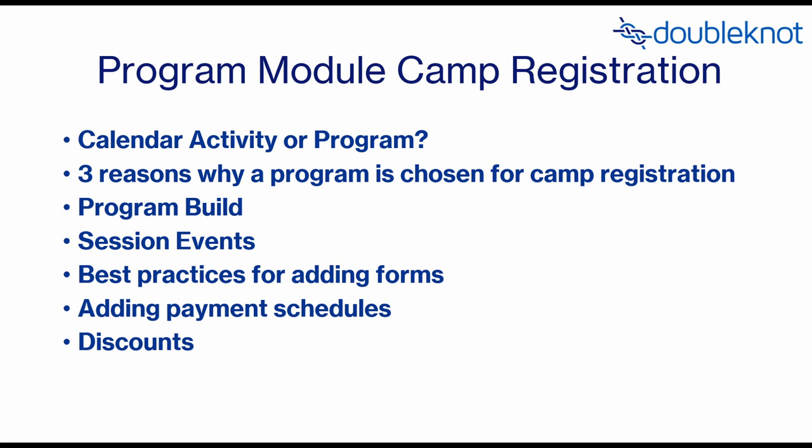Specifically, the type of discount we're talking about is: if you register for multiple weeks of camp you get a certain amount off. A lot of organizations offer that — register for three days of camp and get 25% off, or register for two or more weeks of camp and get $100 off. The program module is what you would need to use if you have those types of discounts.